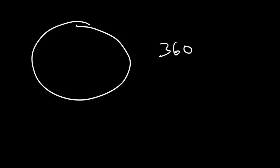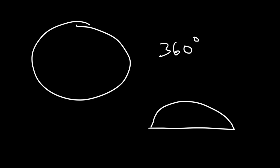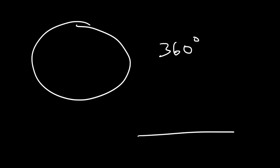A full circle is always 360 degrees, but half a circle is 180. If you draw a straight line, the angle that forms is basically in the shape of a semicircle — that's 180.